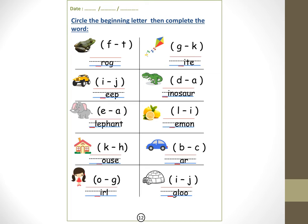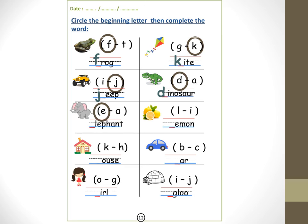Now circle the beginning letter then complete the word. Frog — frog. Kite — kite. Jip — jip. Dinosaur — D, D, dinosaur. Elephant — E, E, elephant.